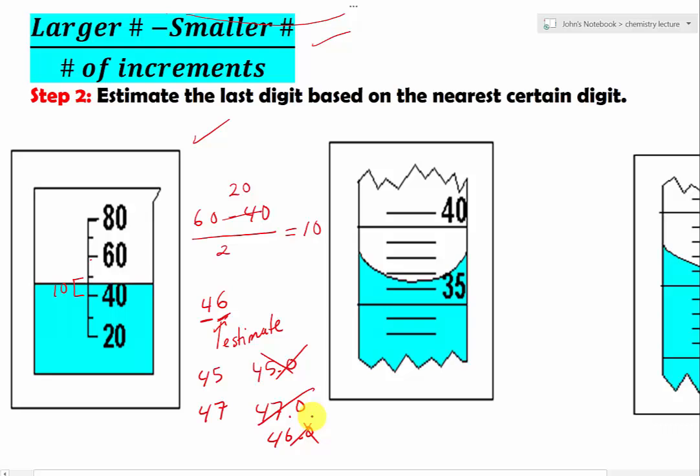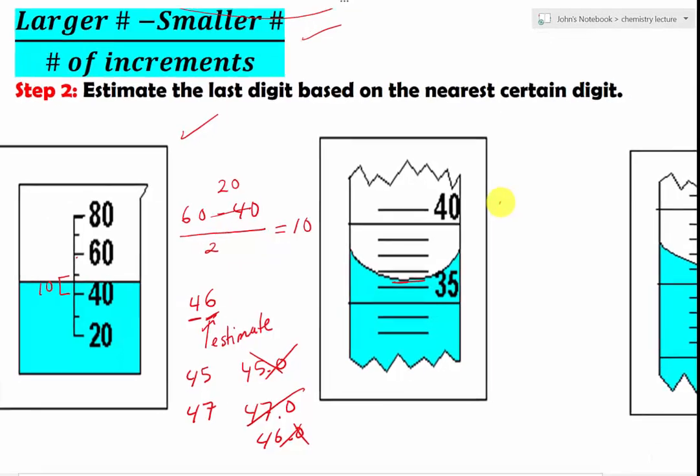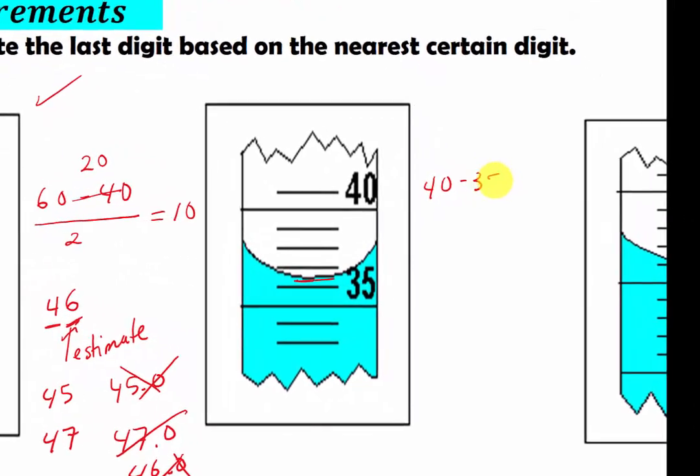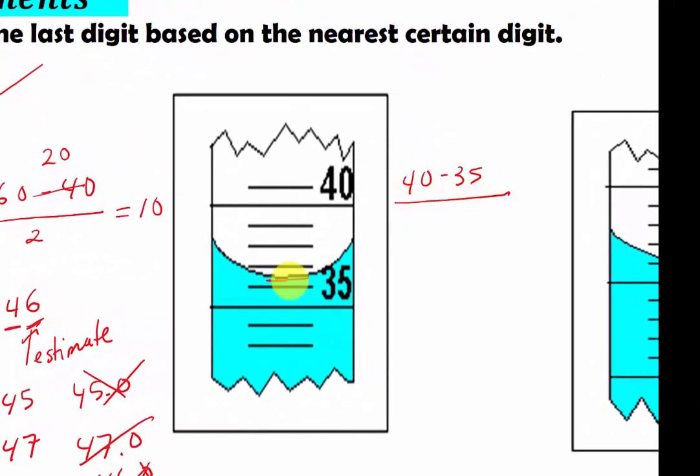Let's try another one over here. We have this right here at the meniscus level. We have 35 and 40. So to find the values of one increment is 40 minus 35 divided by how many increments? We have 1, 2, 3, 4, and 5. So it's 5. 40 minus 35 gives us 5. 5 divided by 5 gives us 1.